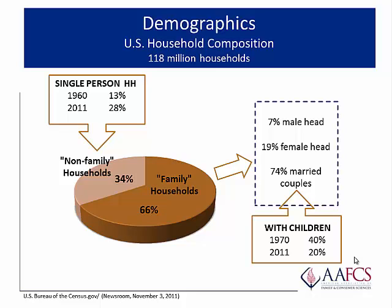This shows the composition of family households. 7% have a male-only head, and 19% a female-only head. 74% are comprised of married couples. Among the married couple families, there has been a precipitous decline in the percentage of households with children, dropping from 40% in 1960 to 20% in 2011.